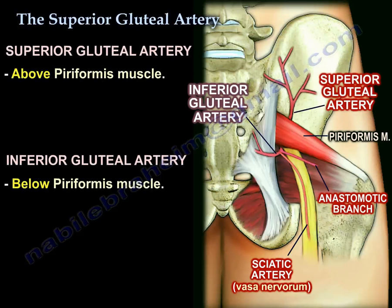To summarize: the superior gluteal artery is above the piriformis, and the inferior gluteal artery is below the piriformis.